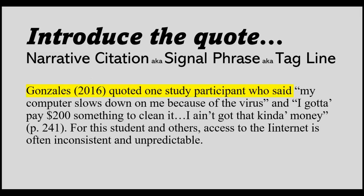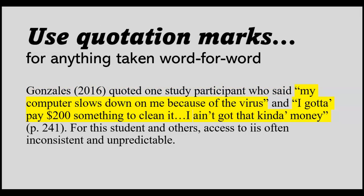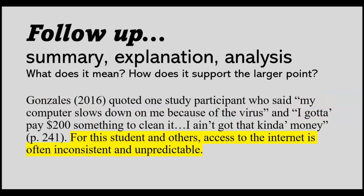Here's an example of a quotation that is sandwiched nicely. In yellow, we have the top bread of the sandwich — introducing this as coming from the Gonzales article and telling the reader that we're quoting a study participant. Then we have the quote itself, which is interesting — about this person having trouble with his computer. The bottom part of the sandwich is an explanation of what this quote means in the context of the academic article.